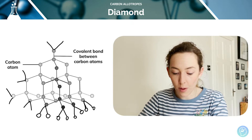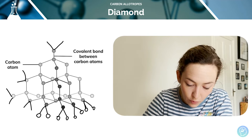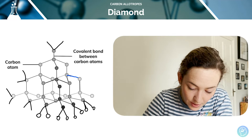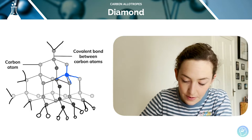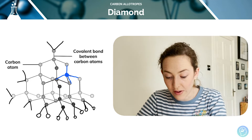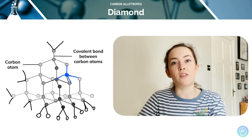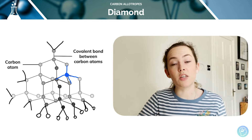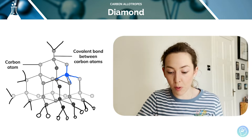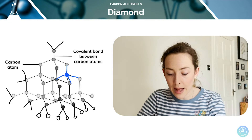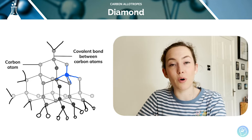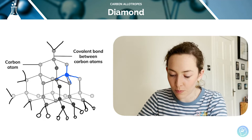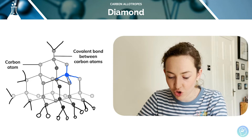Each carbon atom forms four bonds — one, two, three, four — all four covalent bonds. Diamond is very, very hard in terms of its physical properties and it's very difficult to break because it's got four covalent bonds. All the possible covalent bonds are formed and they're very strong.